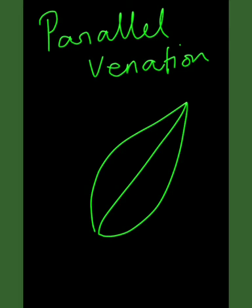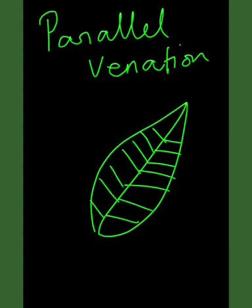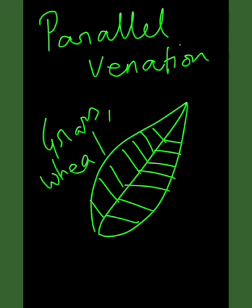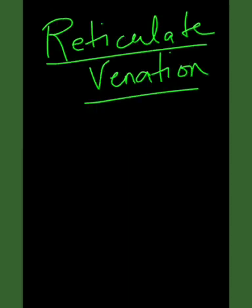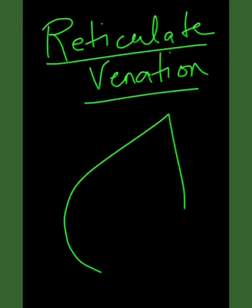In case of parallel venation, the veins are arranged in parallel rows within the leaf. Examples include leaves of monocots such as grass, wheat, and banana, which all have parallel venation.